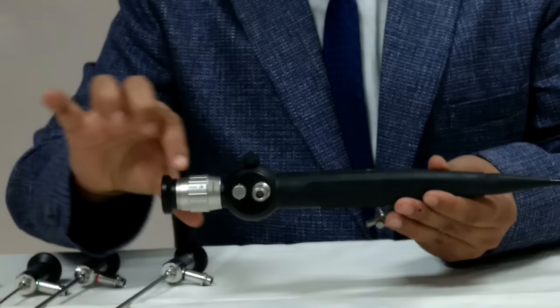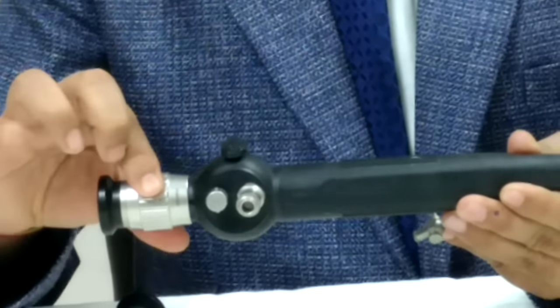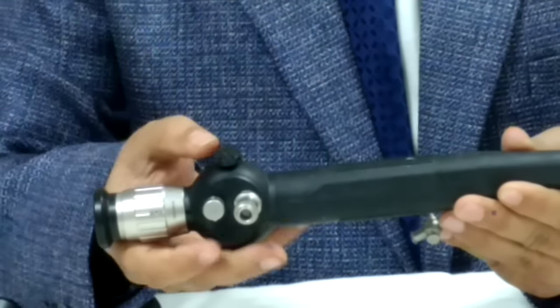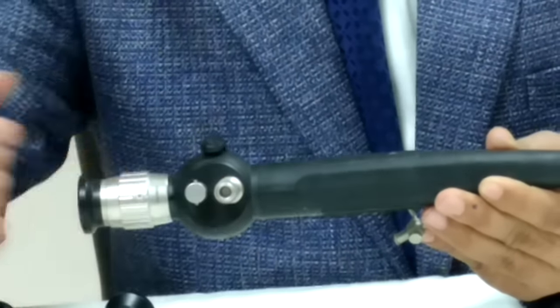You can see this is eye piece. This is to adjust your focus and suppose you are attaching a camera to adjust the focus. This is part for light source to be attached. Fiber optic cable to be attached.